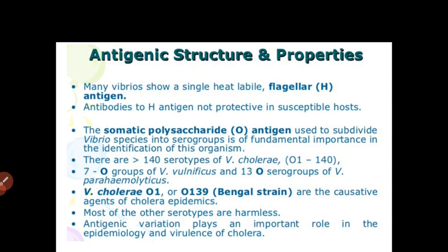Vibrio cholerae O1 and O139 Bengal strain are the causative agents of cholera epidemics; most other serotypes are harmless. Antigenic variation plays an important role in the epidemiology and virulence of Vibrio cholerae.